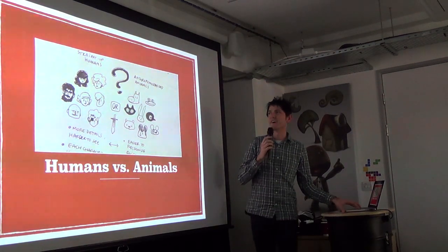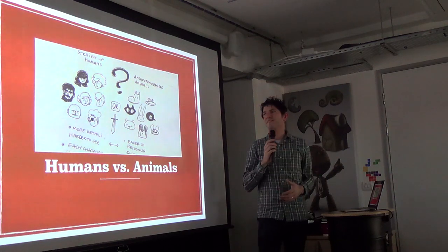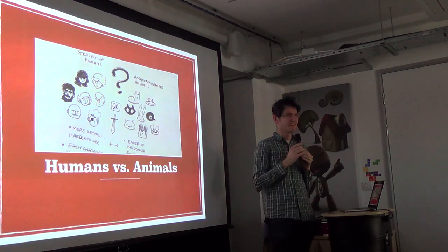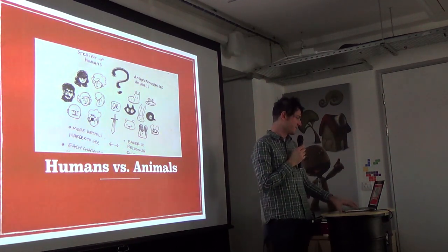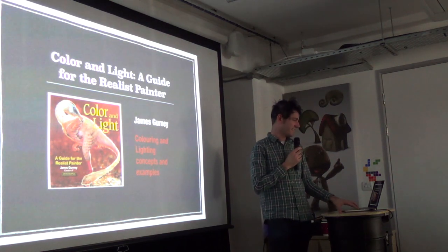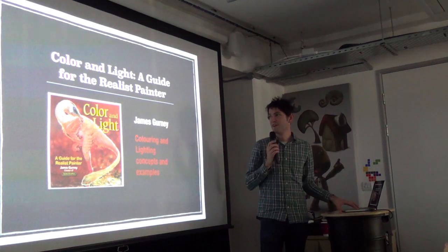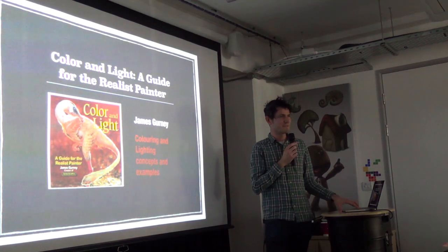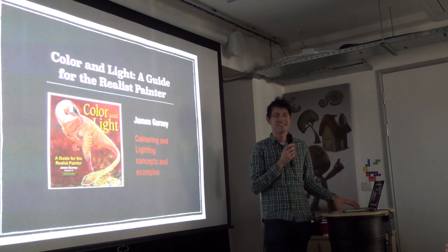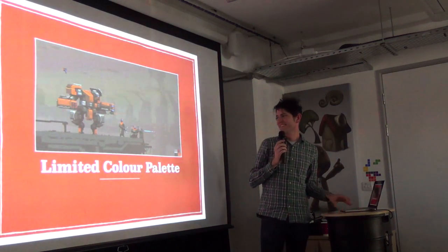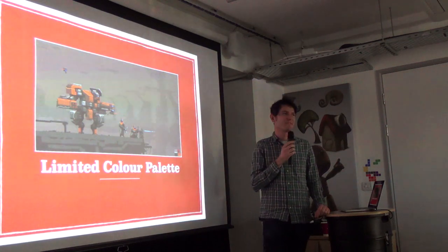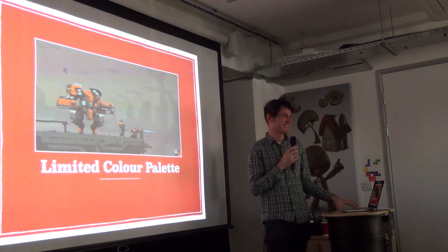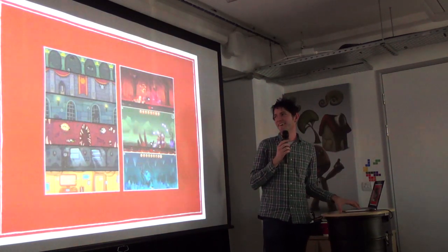Humans versus animals: with animals you can be more exaggerated, give them big ears, and make more unique characters. For color, 'Color and Light: A Guide for the Realist Painter' is a really good book — even if you're terrible at art, learning artistic principles helps when working with artists. A limited color palette looks so much cooler than using every color under the sun — that's the success of artists like Olly Moss. Stone doesn't have to be gray — gray things take on the colors of the light around them, so stone can be green, purple, or dark blue.